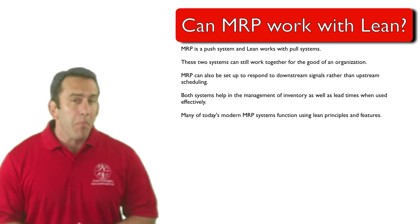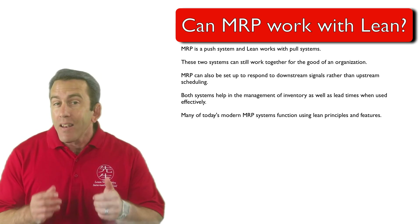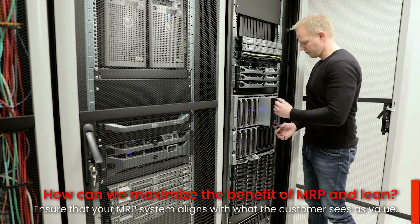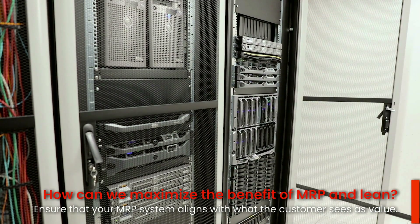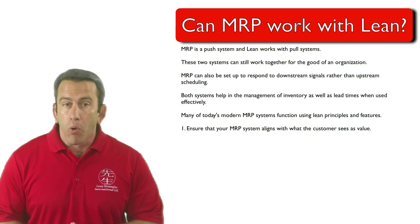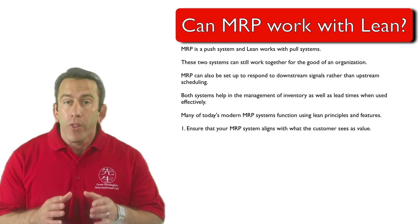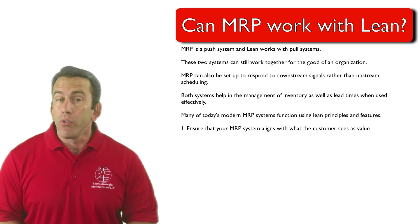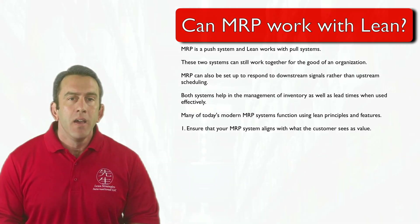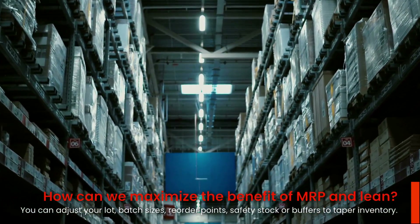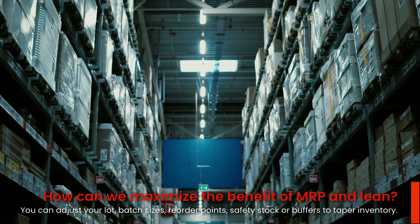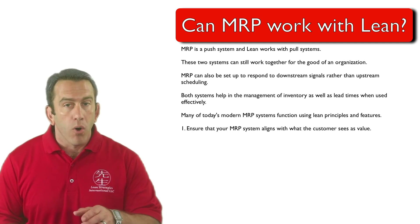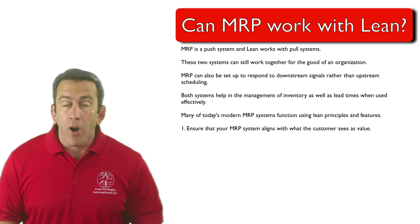How can we maximize the benefit of technology and LEAN? Firstly, you need to ensure that your MRP system aligns with what the customer sees as value. As you better understand what the customer wants, when they want it, and how they want it, you can align your system to have more accurate scheduling and build to actual demand. You can adjust your lot and batch sizes, reorder points, and safety stocks or buffers as you taper your inventory down. MRP can also help you prioritize orders based on customer preferences.